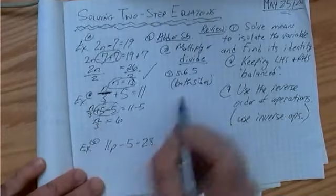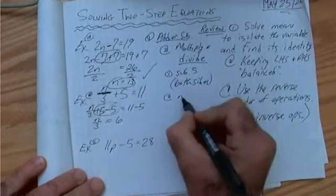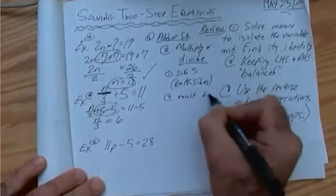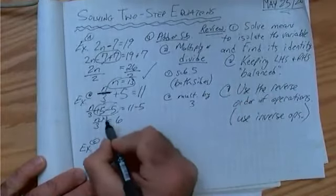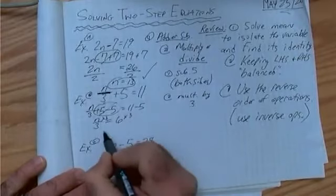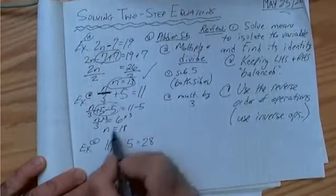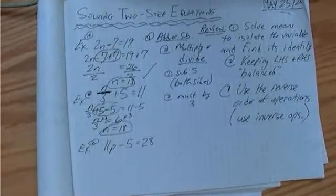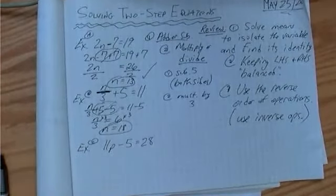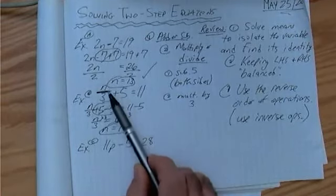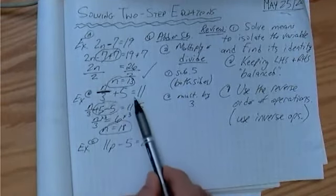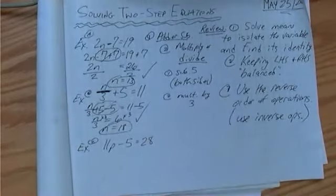So this is divided by 3. So our second step is multiply by 3. So if we take both sides and multiply by 3, n is equal to 18. We could substitute into the original equation. You would see that that works out. 18 divided by 3 is 6 plus 5. Does that equal 11? Yes it does. So it's verified.